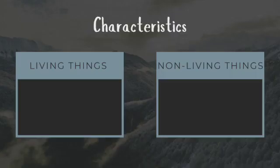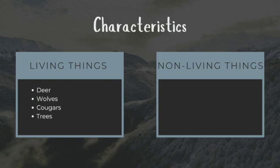In mountain ecosystems, we have living and non-living things, just like all other ecosystems. Some examples of living things are deer, wolves, cougars, and trees. Some examples of non-living things are rivers, rock, mud, and snow.